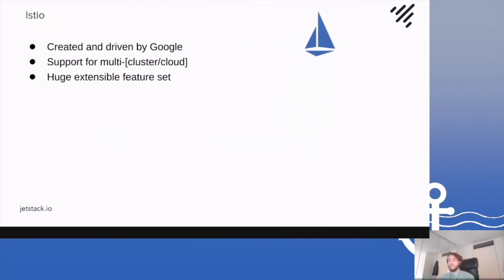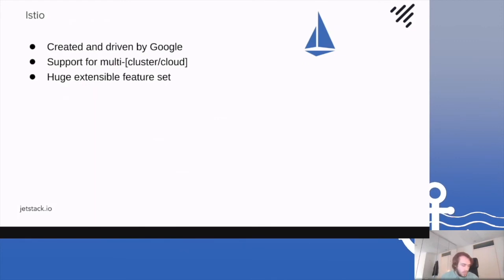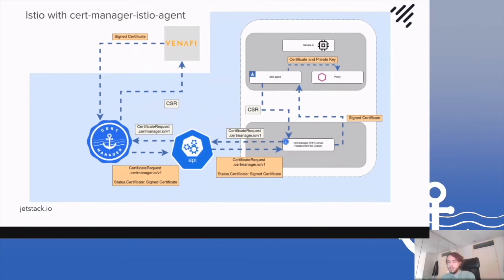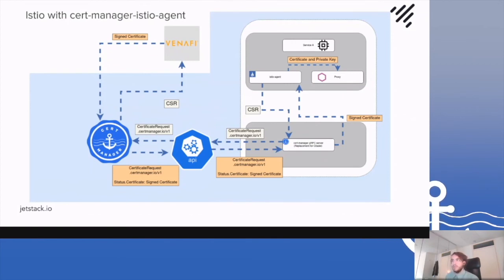After this integration, the next one — it was clear we wanted to do Istio. Istio is another service mesh driven by Google, which has a very rich extensible feature set, supports multi-cloud on the cluster, and is the driving force behind Anthos. In the Istio example it's slightly different. In the current implementation I'm working on — which I hope to be in a working state soon — instead of the request from the Istio agent to get the certificate request signed going to the normal Istio component responsible for certificate signing, instead we'll be sending it off to a CertManager Istio agent.